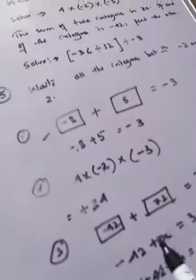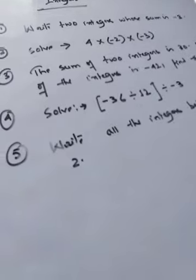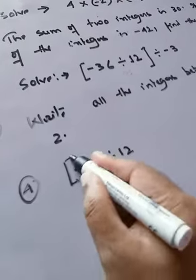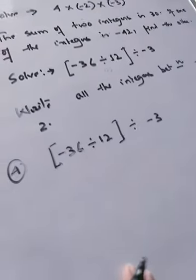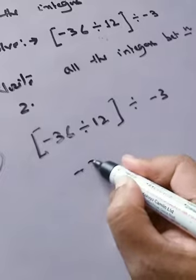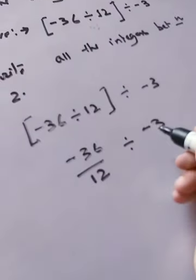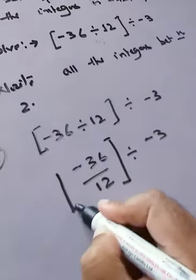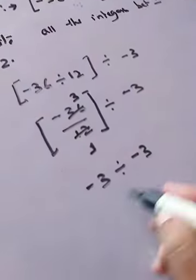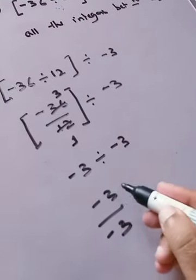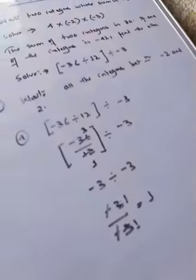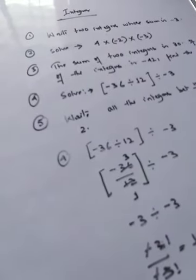Question number four: [minus 36 divided by 12] divided by minus 3. We always solve the bracket first. Minus 36 divided by 12 equals minus 3. Now we have minus 3 divided by minus 3. Both numerator and denominator carry a minus sign, so they cancel. Three divided by three is one, so the answer is 1.